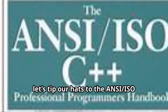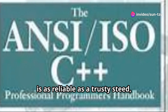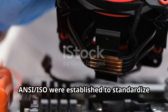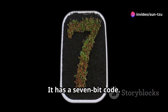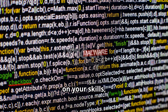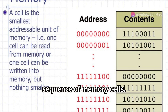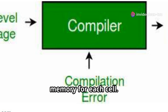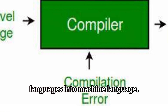Finally, let's tip our hats to the ANSI/ISO standard C++. This standard ensures that our C++ code is reliable no matter where you are or what compiler you're using. ANSI/ISO were established to standardize the syntax of C++, and it has a 7-bit code. Main memory consists of an ordered sequence of memory cells, and an address is a unique location in main memory for each cell. A program called a compiler translates instructions written in high-level languages into machine language.